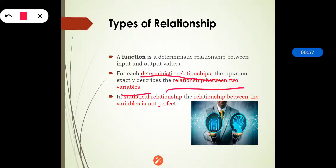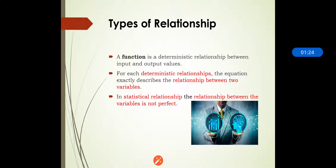In a statistical relationship, the relationship between two variables is not perfect. Basically, we are studying the deterministic relationship and the functional relationship. In deterministic relationship, it describes the relationship between two variables exactly, whereas in statistical relationship the relationship between the variables is not the perfect one. These are the basic two types of relationship: the deterministic relationship, also called the functional relationship, and the statistical relationship.